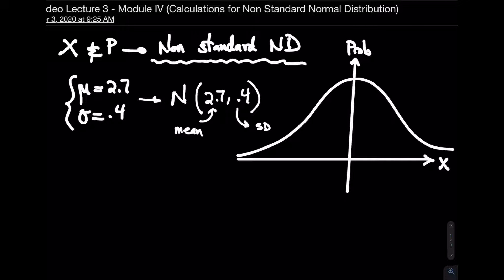The horizontal axis is represented by x and the vertical axis by probability. There are two cases here, just like for z. The first case is: given x, find p. The second case is: given p, find x — the reverse, or inverse problem. And remember, we're dealing with non-standard normal distribution here.